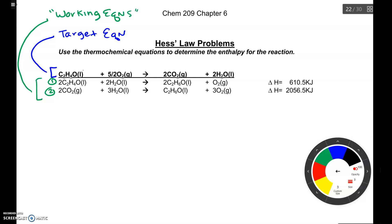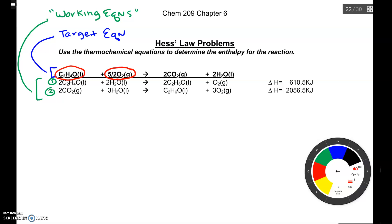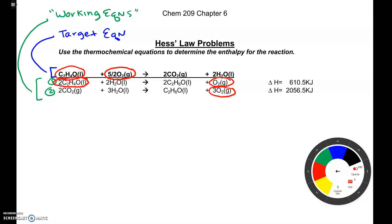Looking at the left-hand side of the target equation, I've got C₂H₄O and oxygen gas as my two reactants. I want to find where these reactants show up in working equations 1 and 2. C₂H₄O can only be found in one spot — on the left-hand side of equation 1. Oxygen gas shows up in two places. I'm circling all of my reactants in red.